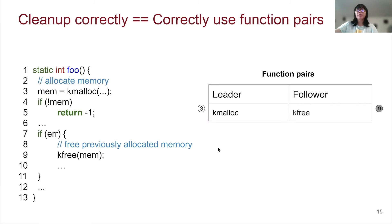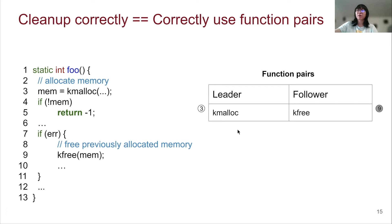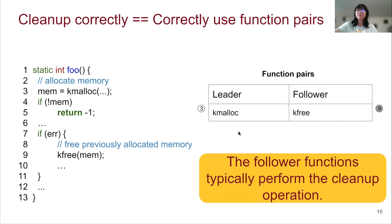Here is a simple example to show a function pair. The function pair is kmalloc and kfree. kmalloc is a commonly used allocation function in the Linux kernel, which is used to allocate memory. kfree can obviously be used to release the memory allocated by kmalloc. So in this function pair, we call kmalloc the leader function and kfree the follower function. The follower function typically performs cleanup operations, just like kfree in this example.